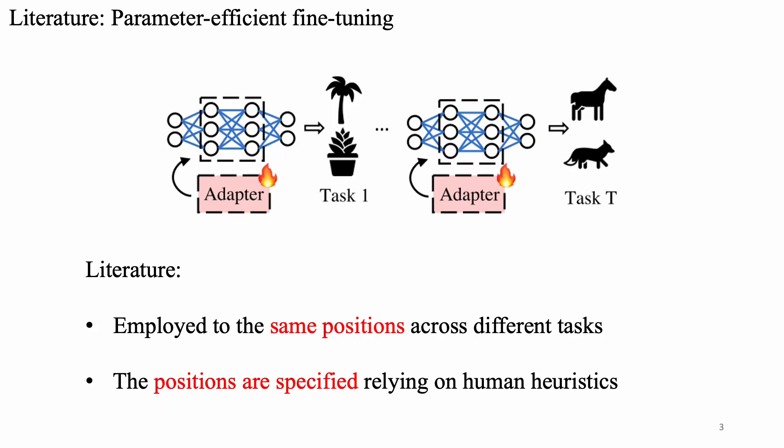The existing literature — for example, Adapter and LoRA — they were employed to the same positions across different tasks. However, those positions are specified relying on human heuristics, neglecting the domain gaps and differences.